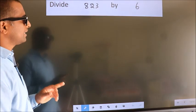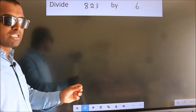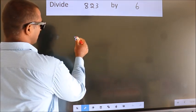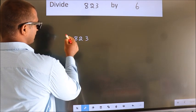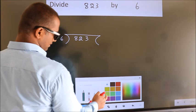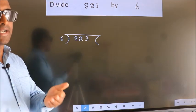Divide 8.23 by 6. To do this division, we should frame it in this way. 8.23 here, 6 here. This is your step 1. Next,